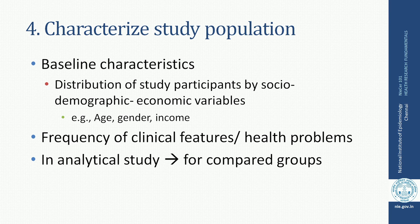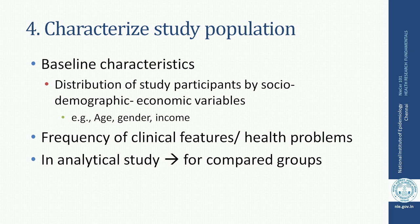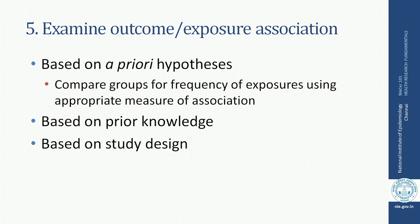Fourth, you need to characterize the study population with reference to its basic characteristics — socio-demographic and economic variables such as age, gender, and income groups. If it involves an analytical study, you look at these variables across the two or three comparison groups. You may also want to look at the frequency of clinical features in characterizing the study population.